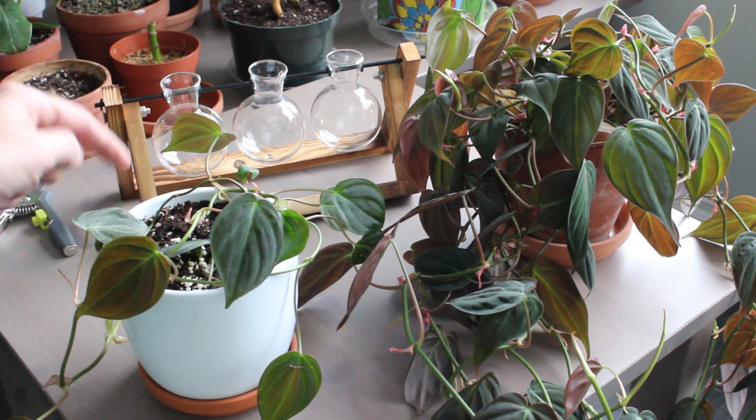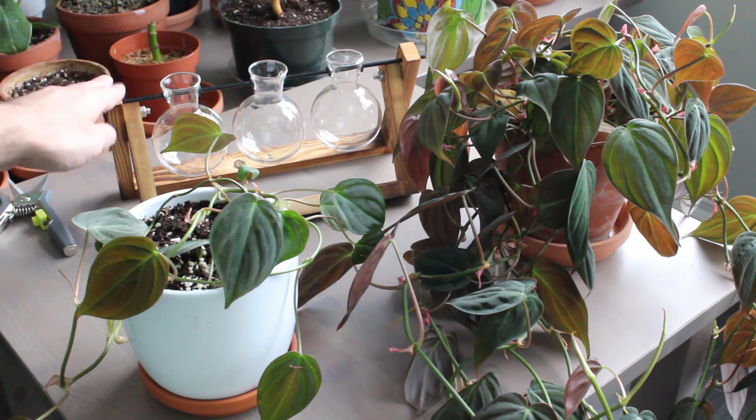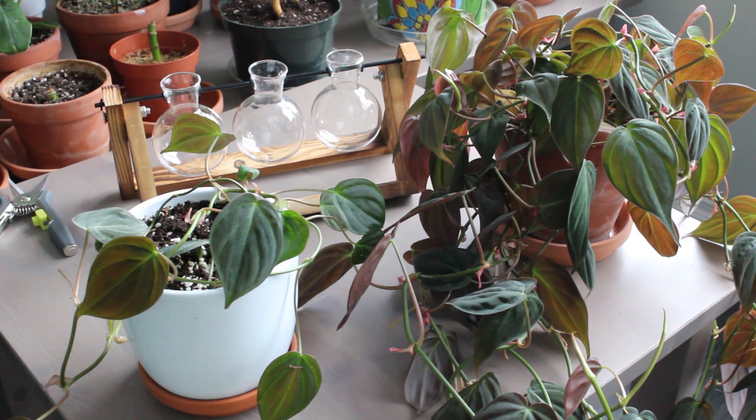In my recent propagation update video I mentioned that I wanted to propagate these beautiful philodendron micans. So I went on Amazon and bought this propagation station for like 20 bucks. I've seen them around here for 50.